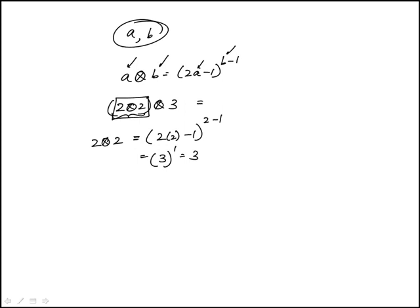Now we replace this with 3. This would be equivalent to 3 cross 3. And then we apply the rule again where now a is 3 and b is 3. So this would be 2 times 3 minus 1 to the power of 3 minus 1.